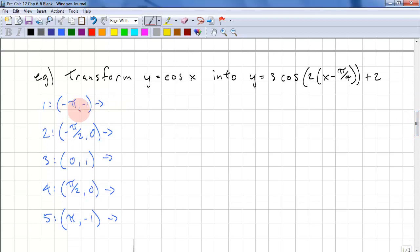We have minus pi minus 1. This becomes minus pi over 2 plus pi over 4, 3 times negative 1 plus 2. And this gives us negative pi over 4 and negative 1. Here we have negative pi over 2 over 2 plus pi over 4, and 3 times 0 plus 2. This gives us 0 and 2.